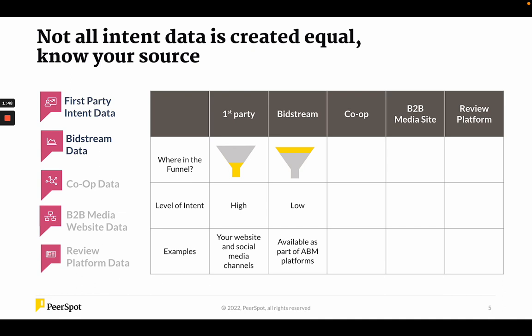As you can see, bitstream data is available as part of a lot of ABM platforms because it's easy to get access to, but it doesn't show a true amount of intent. Co-op data, on the other hand, is sourced from a group of public publishers and websites that pool data together so they can have access to a larger data set. This can be anywhere in the funnel. It's usually based on articles with a wide range of topics, so the level of intent is medium because you don't know what the article was about. A good example of that is Bombora.